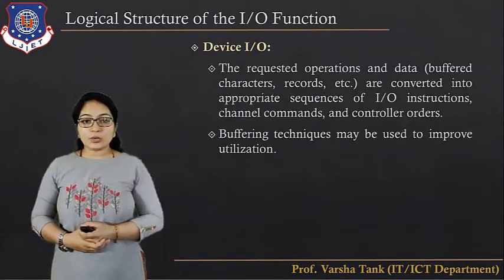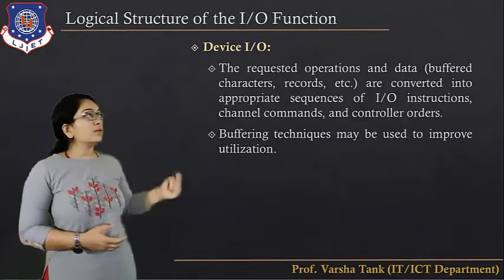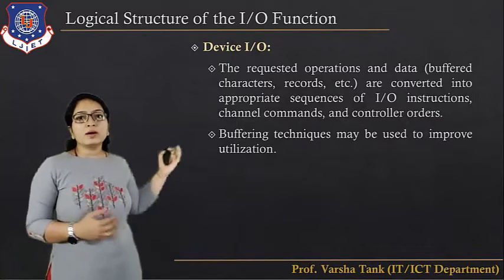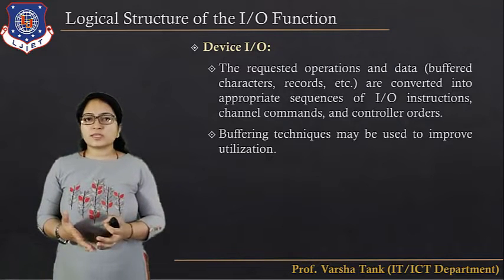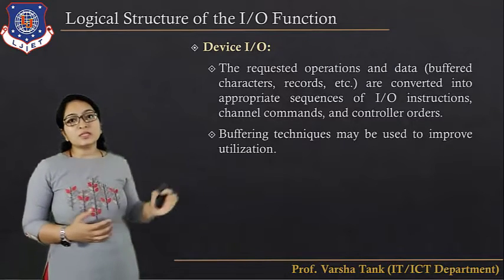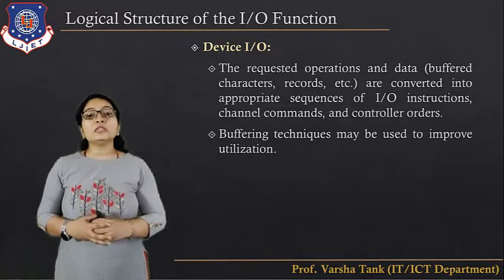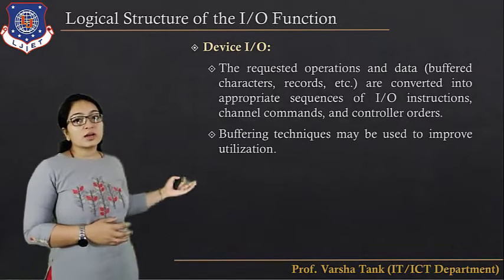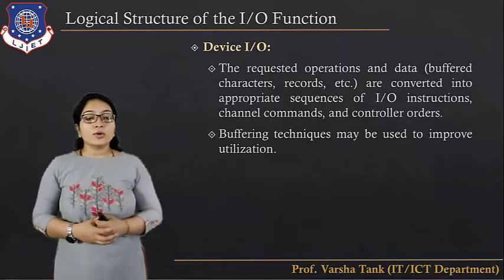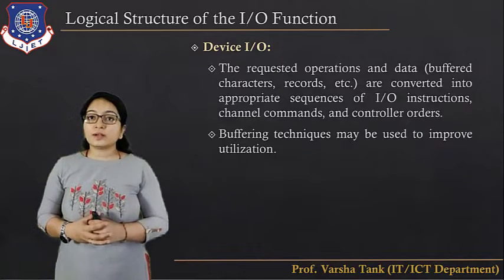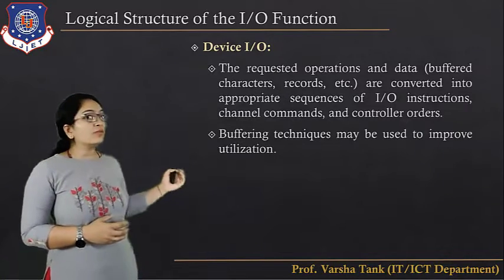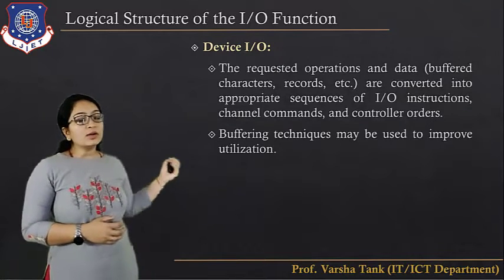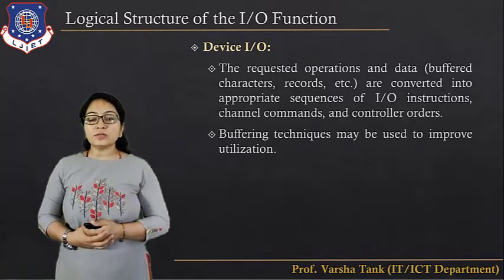Next is the device IO layer. The requested operations and data — buffers, characters, records, etc. — are converted into the appropriate sequence of IO instructions, general commands, and control orders. Buffering techniques may be used here to improve utilization, and we will see the different types of buffers later in this lecture.